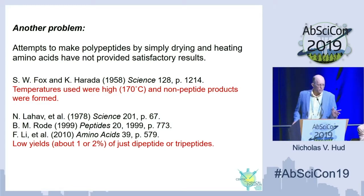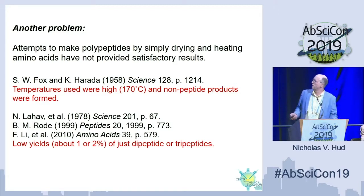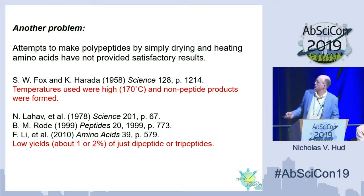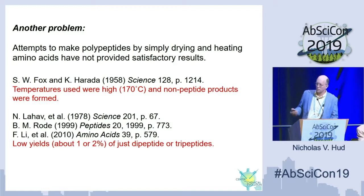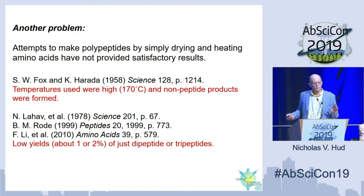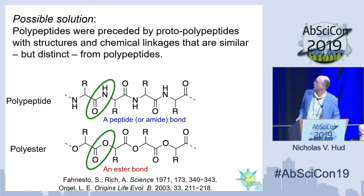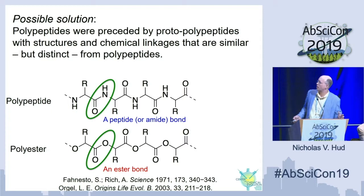However, early on we ran into another problem: attempts to make polypeptides by simply drying and heating amino acids have not provided satisfactory results. Some of the earliest attempts were from Sidney Fox and collaborators back in the 1950s, resulting in non-peptide products at pretty high temperatures. Lahav, Rode, and others have looked at this under lower temperatures where you don't get those side products, but they typically get pretty low yields — about one to two percent of just dipeptides or tripeptides.